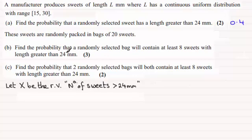Again, you're going to have either success or failure. Success, say, being getting a sweet with a length greater than 24 millimeters. And that's going to be having a probability of 0.4. So what we've got here is essentially a binomial distribution. So I'm going to say here where X is distributed binomially. And the two parameters will be n and p. n is the number of trials, 20. And p is 0.4, probability of success, getting a length greater than 24 millimeters.